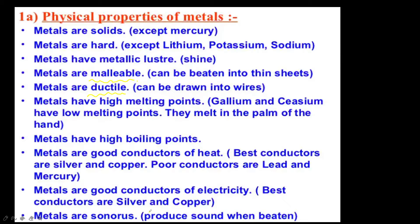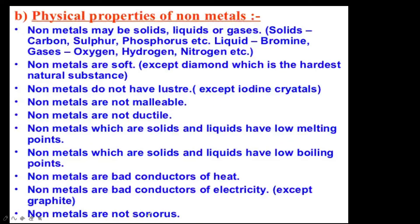Regarding density, the densest metal is osmium and the lightest metal is lithium. Osmium has a density of 22.7 and lithium is 0.54. Metals have high melting points; gallium and cesium have low melting points. Metals are good conductors of electricity — the best conductors are silver and copper. Gold is the most malleable metal and silver is the most ductile metal. These two things you need to remember.